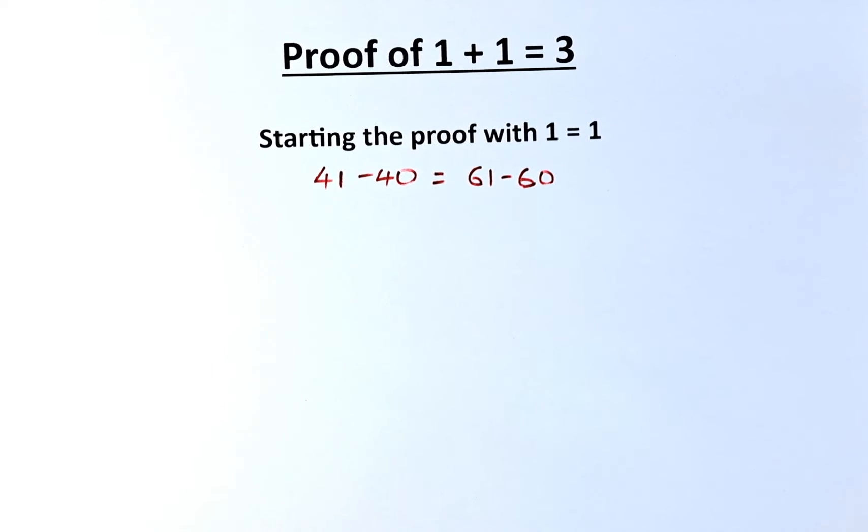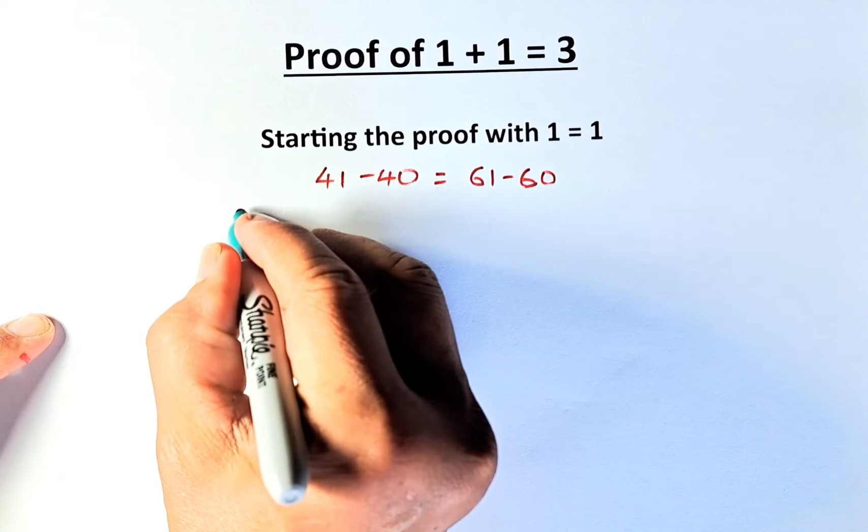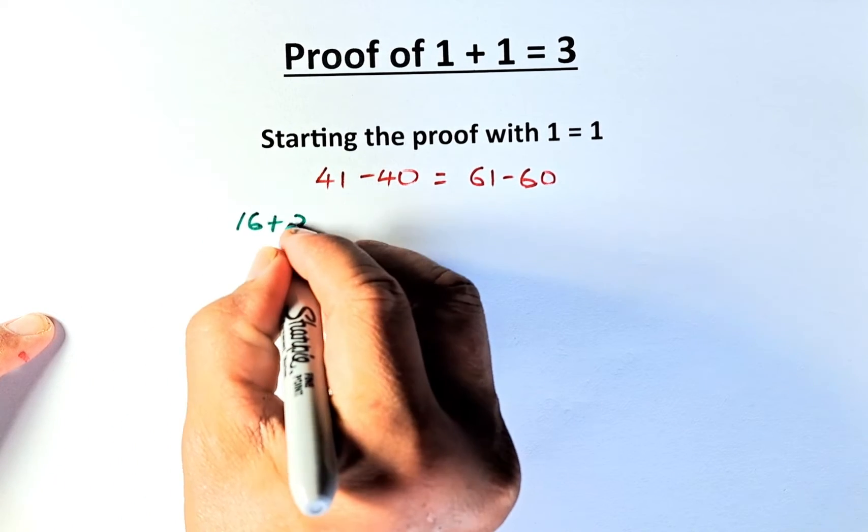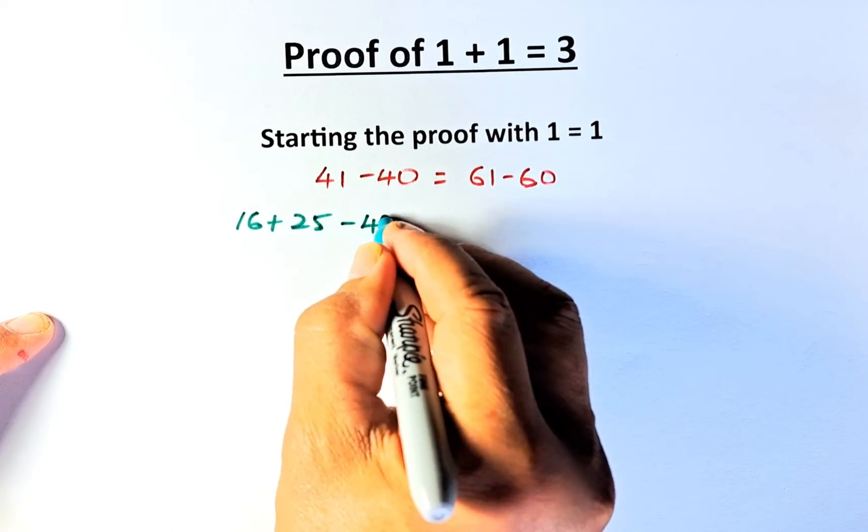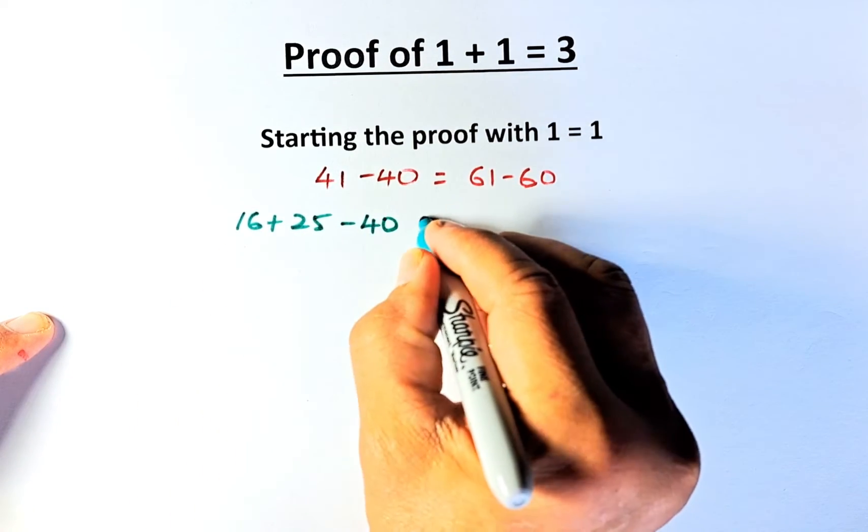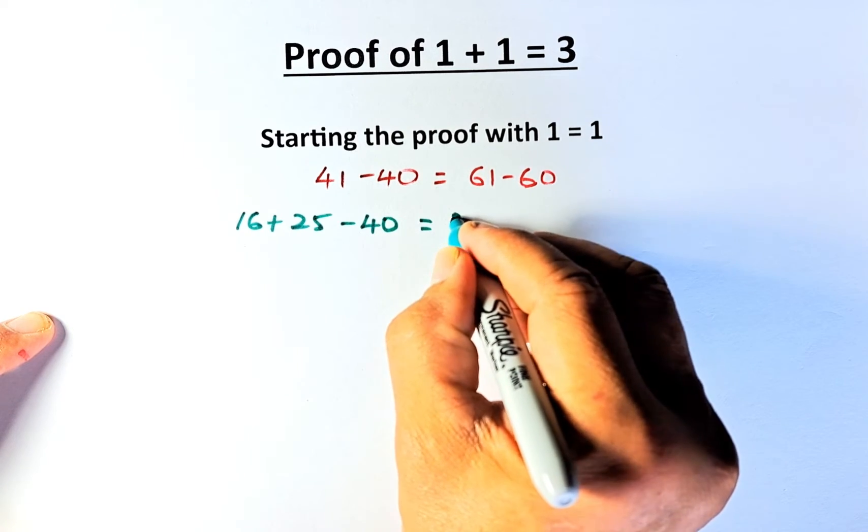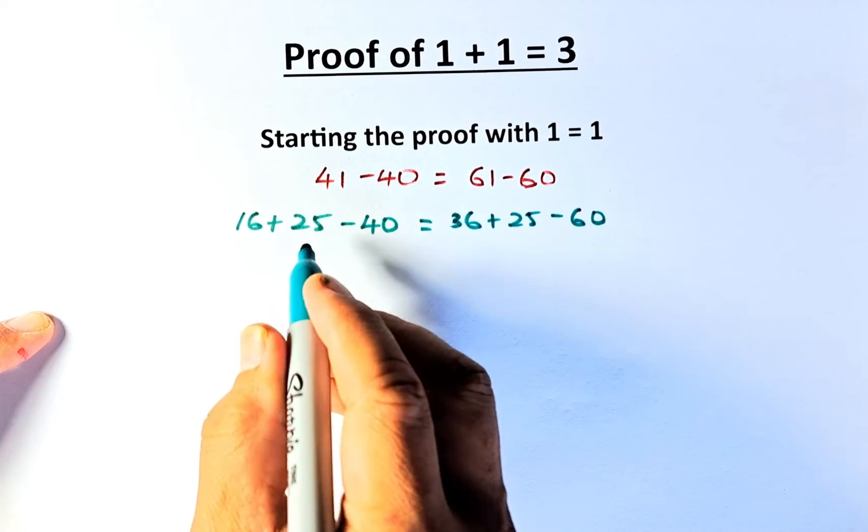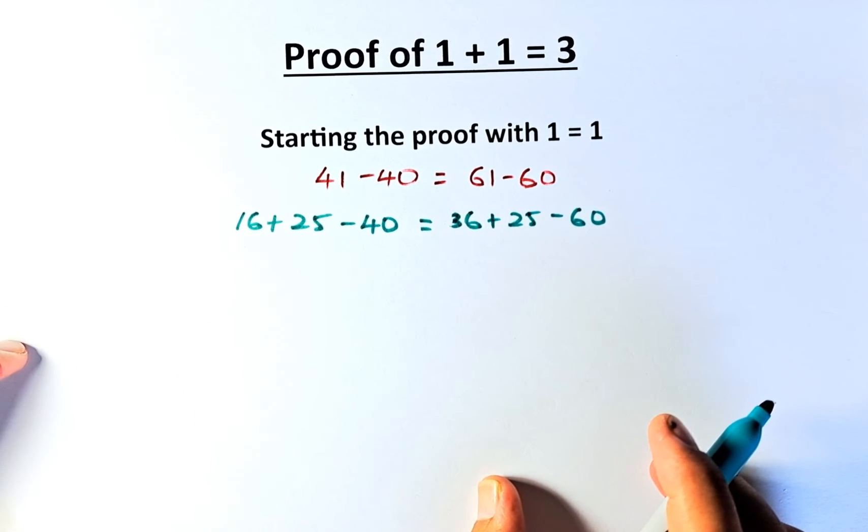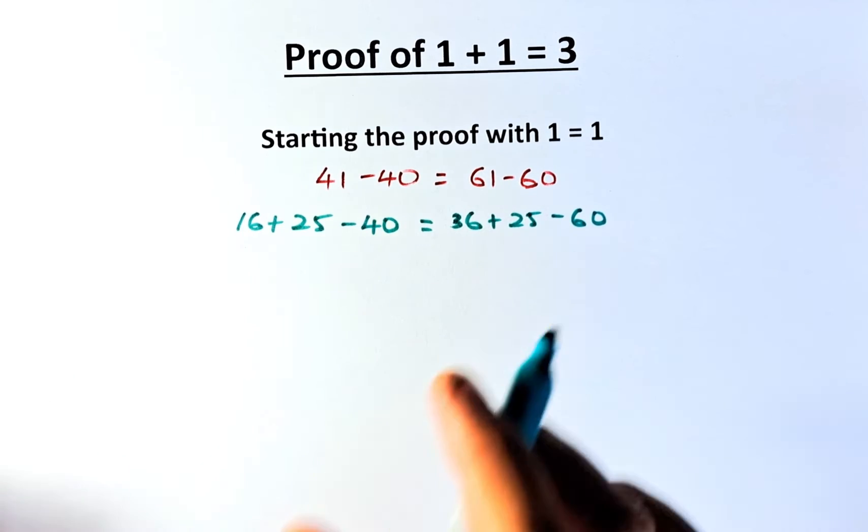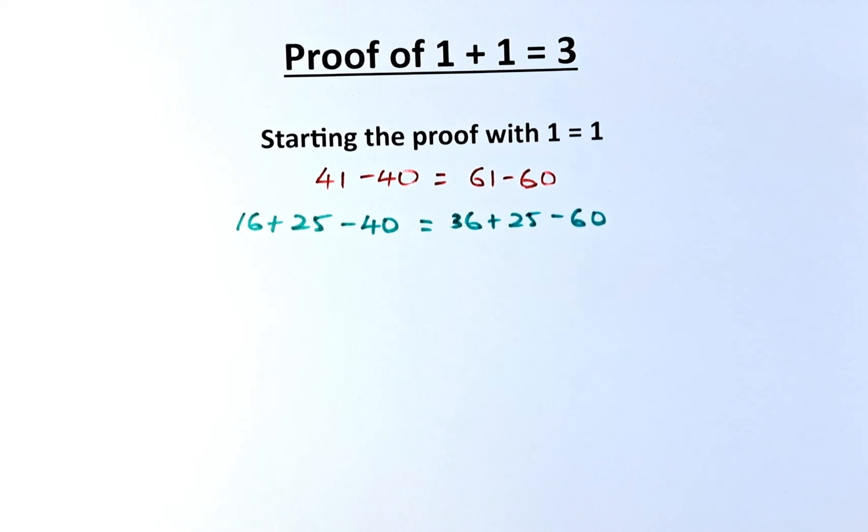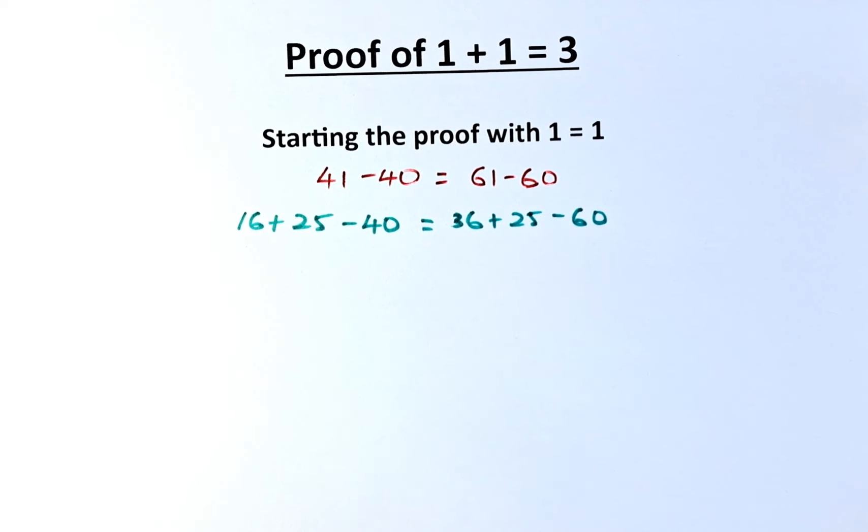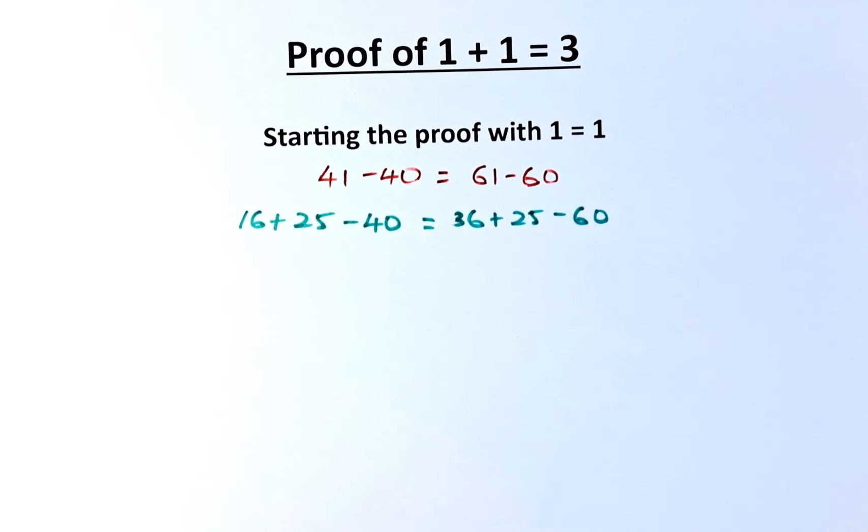Now we're going to simplify the numbers 41 and 61. 41 is the same as 16 plus 25, and we're still minus 40. Then 61 is going to be 36 plus 25 minus 60. So 16 plus 25 is 41, minus 40 gives the same number. And 61 is broken down into 36 plus 25, minus 60.